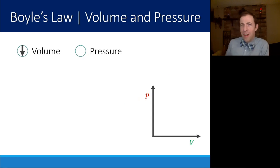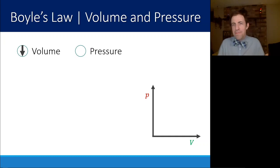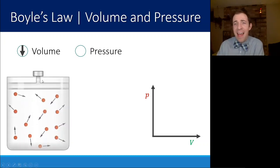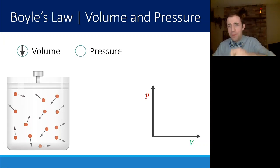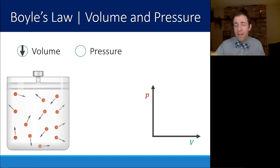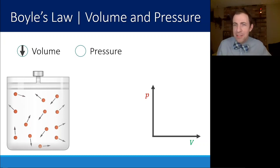The first gas law is Boyle's Law — a relationship between volume and pressure. For each of these laws, we're going to talk about what the molecules are doing to understand how these properties are related. If you have a container with a gas in it, the molecules are moving in random directions and hitting the sides of the container — that is what gives them pressure. Every time a molecule hits the side of the container, it imparts a force on that container, just like throwing a ball at a wall. The more collisions there are per second, the higher the pressure.